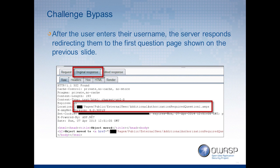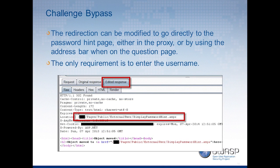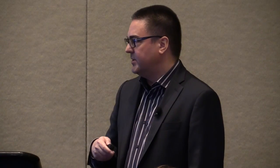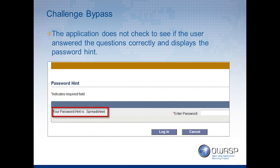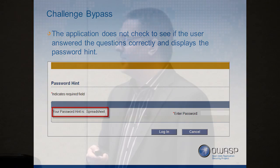The URI sequence went: question one, question two, question three, and ultimately 'display password hint.' Jim discovered he could go directly to the password hint page with just a user ID, and it would display the hint. Your password hint is 'spreadsheet' — what's my password? Excel.